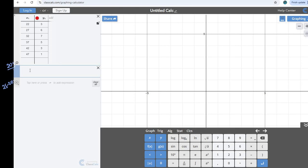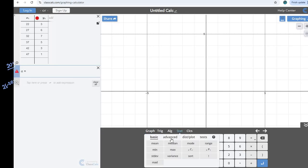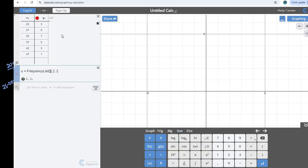And then I need to tell ClassCalc that I'm working with a frequency list. So I'm going to define a variable. It doesn't matter what you pick. I'm choosing a, and I'm going to say that a equals, and I'm going to go into stat and advanced, and find a frequency list.